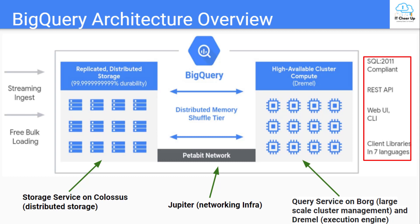The REST API is supported for seven programming languages. There are also connectors to other services such as Cloud Dataproc, which simplifies creating complex workflows between BigQuery and other GCP data processing services. The query service can also run query jobs on data contained in other locations, such as tables in CSV files hosted in Cloud Storage.